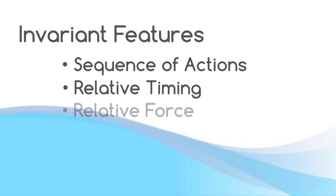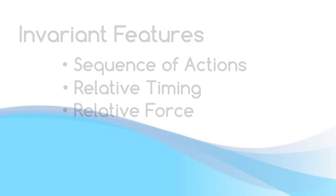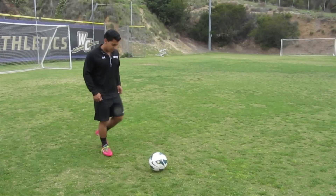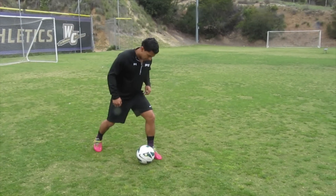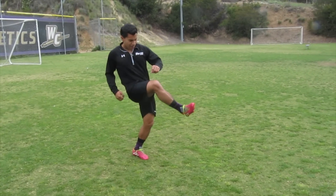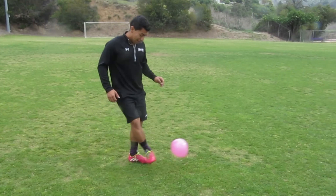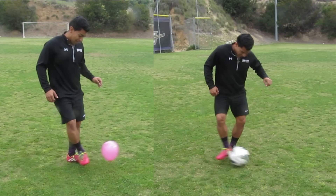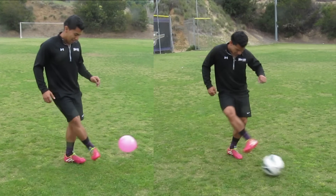The final invariant feature is the relative force, or the ratio of force to weight of an object. Here George demonstrates the difference in the relative force necessary to strike a ball versus the relative force necessary to strike a balloon.